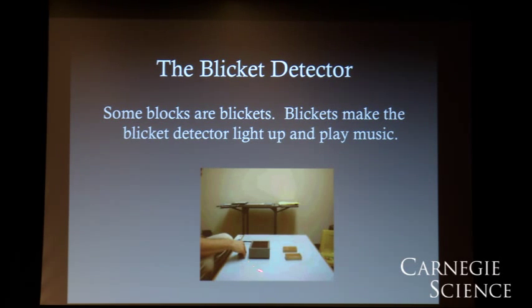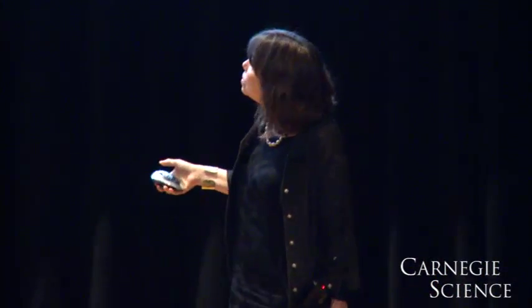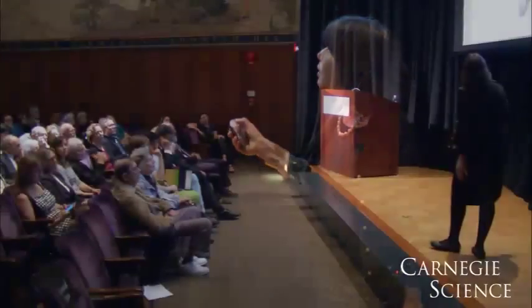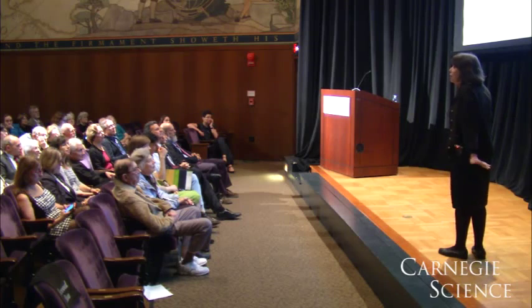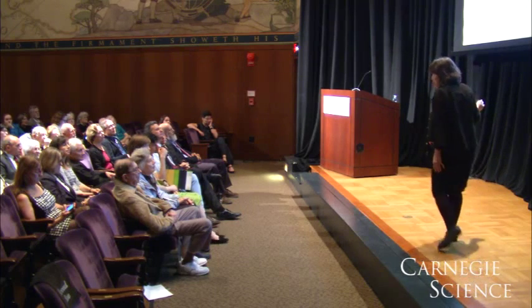With this very simple machine we can show babies and young children patterns of probability — statistical patterns — connecting which block goes on when and whether or not the machine lights up, for example. And we can make these, as you'll see, pretty complicated. Then we can just ask the children which one is a Blicket, or ask them to make the machine go, and see if they figured out the right causal structure from this pattern of statistics without ever having to use words like causal structure or statistics.